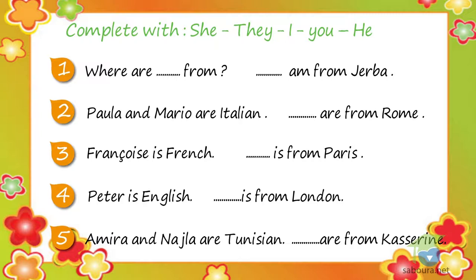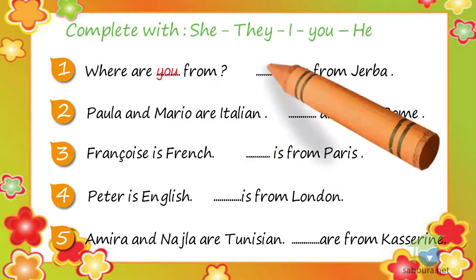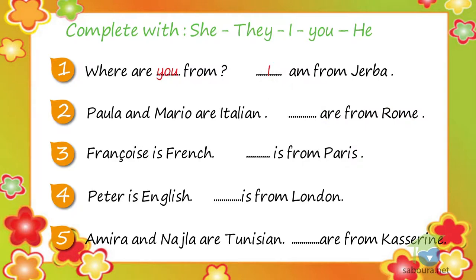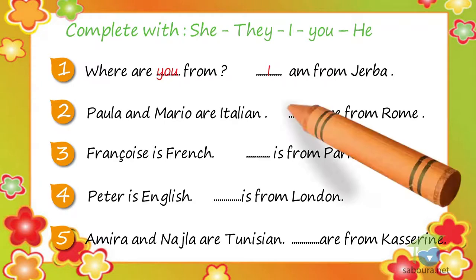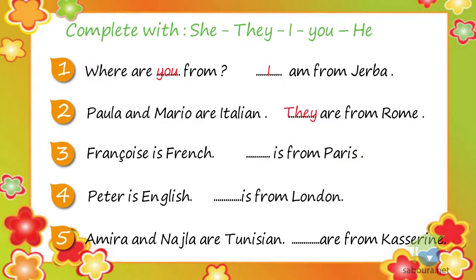The answer. 1. Where are you from? I am from Gerber. 2. Paola and Mario are Italian. They are from Rome. 3. Françoise is French. She is from Paris. 4. Peter is English. He is from London. 5. Amira and Najla are Tunisian. They are from Catherine.